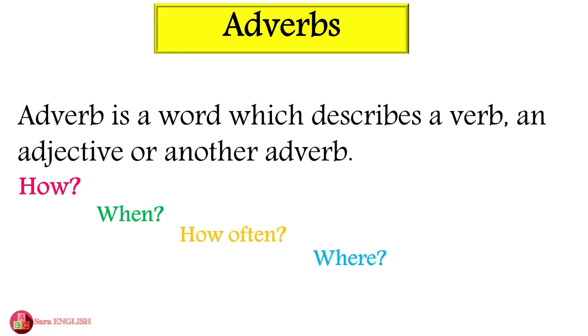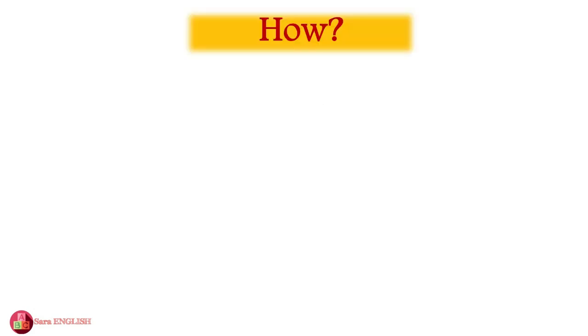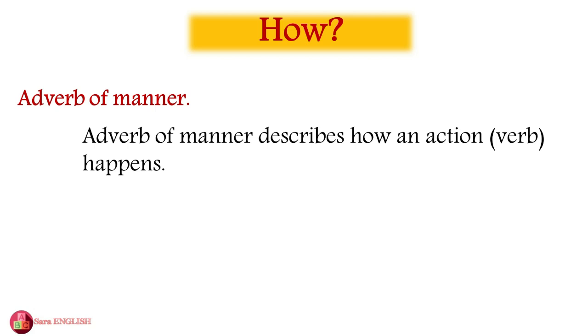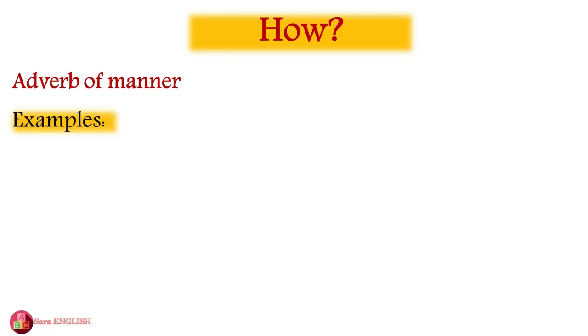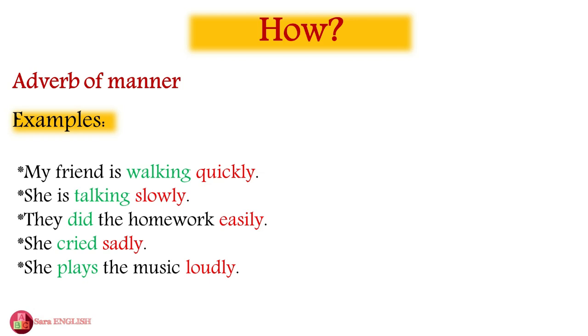An adverb which answers the question how is called an adverb of manner. Adverbs of manner describe how an action happens, for example: quickly, slowly, easily, sadly, and loudly. As you can notice, these adverbs are ending with -ly, but not all adverbs end with -ly. Let's take a look at the following examples: my friend is walking quickly, she is talking slowly, they...